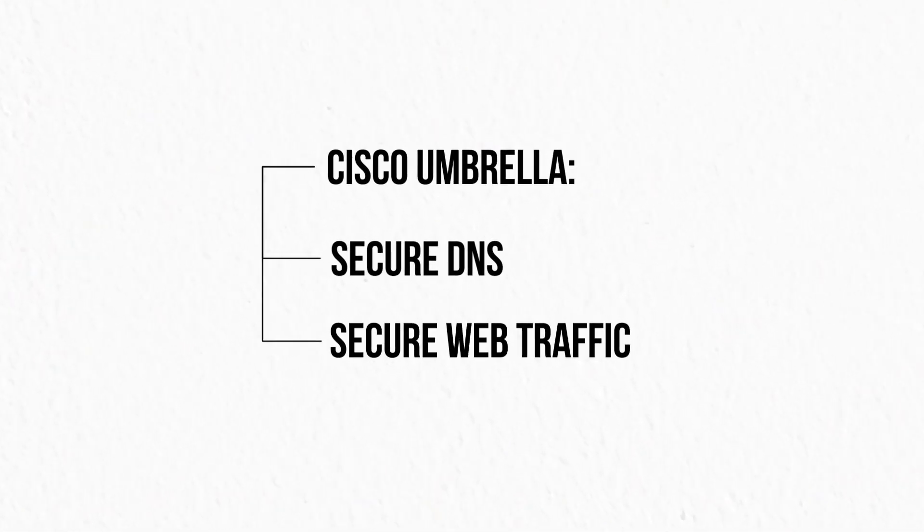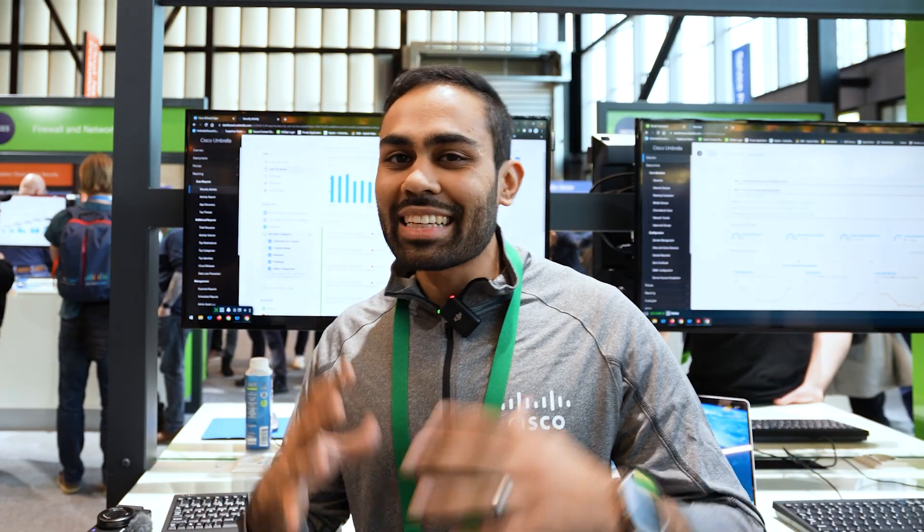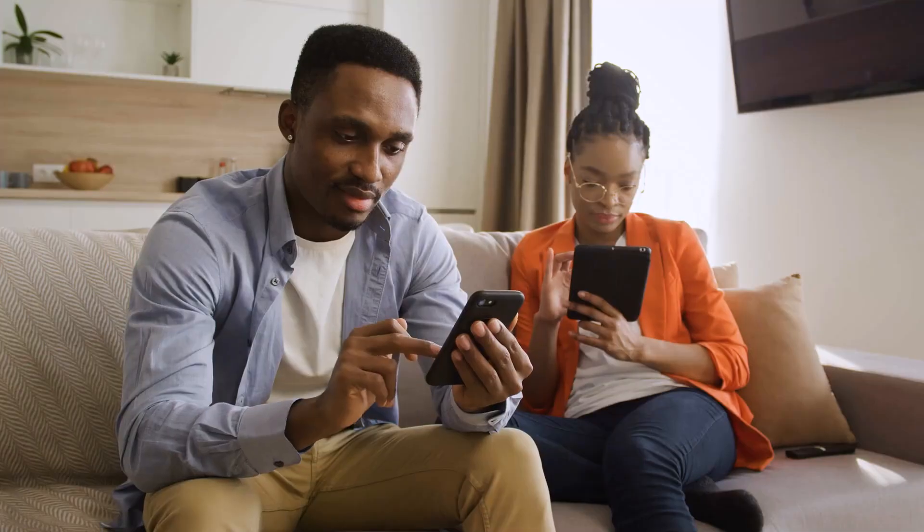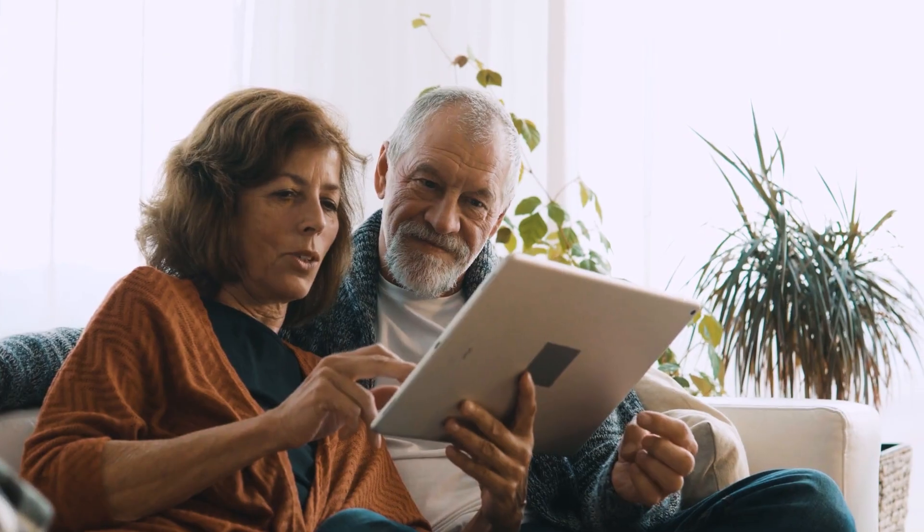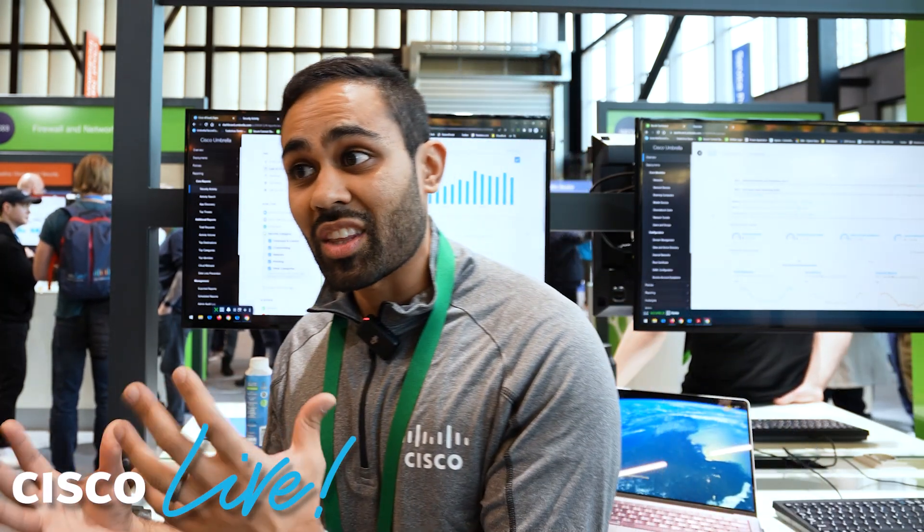DNS is the simplest and easiest way to secure internet access. Anybody can do it for any of their devices — it's just a simple switch of your DNS resolvers. Whenever your computer or device makes a request out to the internet, you're essentially asking Cisco Umbrella where a resource lives. Cisco Umbrella's DNS address is 208.67.222.222.